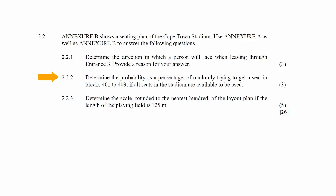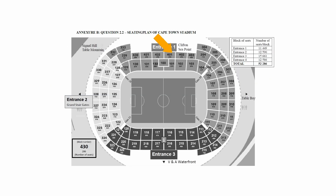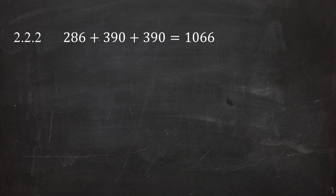In Question 2.2.2 you are instructed to determine the probability as a percentage of randomly getting a seat in blocks 401 to 403 if all seats in the stadium are available. From the key on Annexure B, the block number and the number of seats in each block are identified. The total number of seats in blocks 401 to 403 is: 390 in block 401 plus 390 in block 402 plus 286 in block 403, giving a total of 1,066 seats.